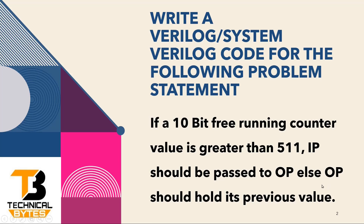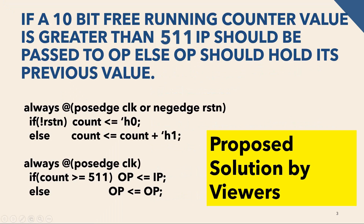If the value is less than or equal to 511, the output OP should hold its previous value. Now let us see what our viewers say about the solution. The most commonly proposed solution is: always at positive edge of clock or negative edge of reset_n — if reset is asserted, count will be zero.